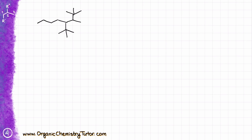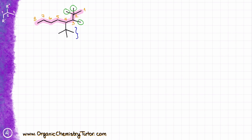Before we wrap up, let's look at one more example. Pause the video, draw this molecule on your piece of paper, give it a name, and then we'll work through it together. Alright — first thing, we need to find the longest continuous chain, which is right here. Next, we number it to give the lowest possible numbers to the substituents: two, three, four, five, six, seven, eight. Then I identify my substituents: I have methyl groups here, here, and here, and I also have a complex tert-butyl substituent.